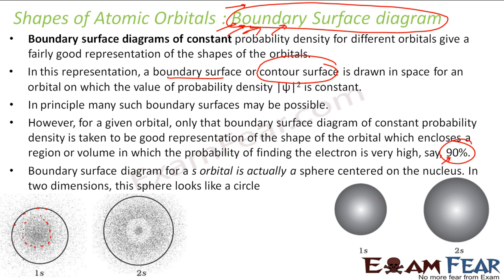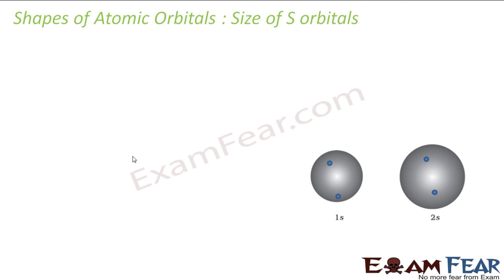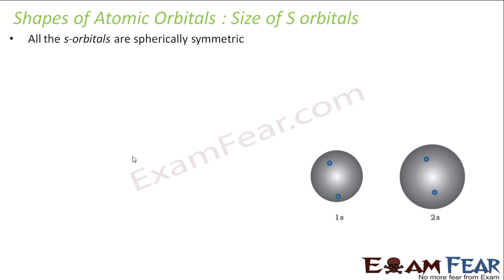The boundary surface for an S orbital is a spherical shape. In two dimensions it looks like a circle, and in three dimensions it looks like a sphere. All S orbitals are spherically symmetric. This is how the electron moves within the sphere — it can be anywhere inside it.